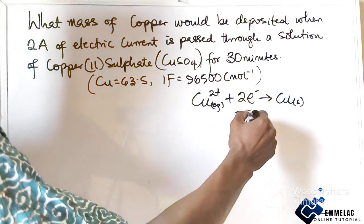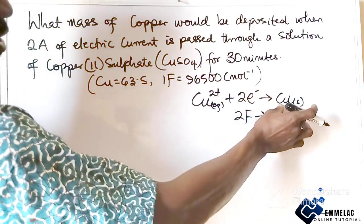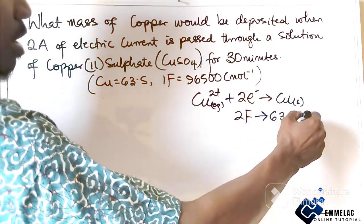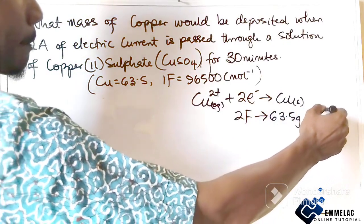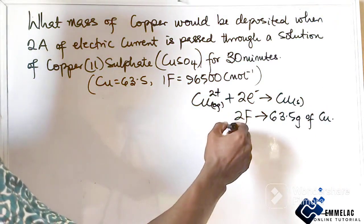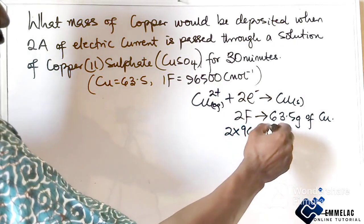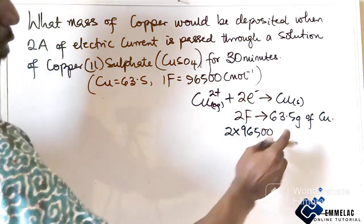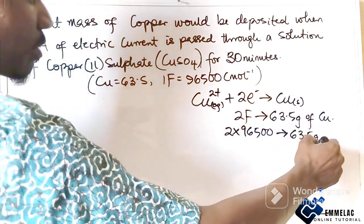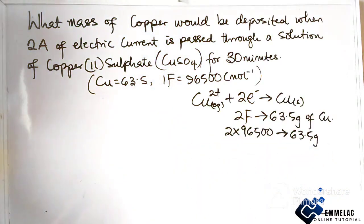This means two Faradays deposit one mole of copper, which is 63.5 grams. So two times 96500 coulombs of electricity deposits 63.5 grams of copper.